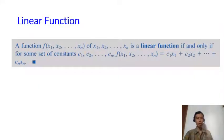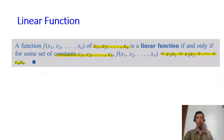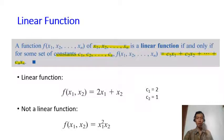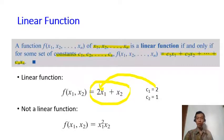Before going to the assumptions, let's take a look at the definition of a linear function. For a set of variables and a set of constants, a linear function looks like this: c1 times x1 plus c2 times x2, up to cn times xn. So for example, 2x1 plus x2 is a linear function, because c1 equals 2 and c2 equals 1.